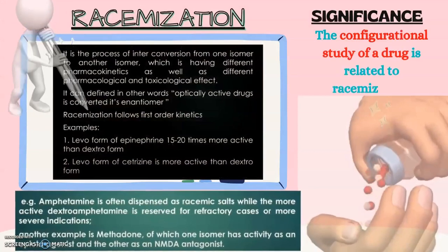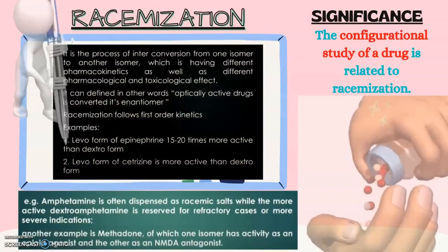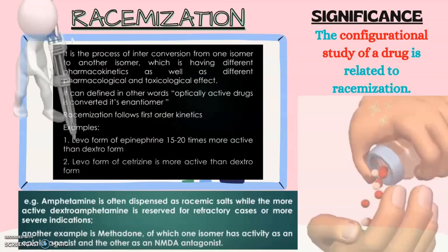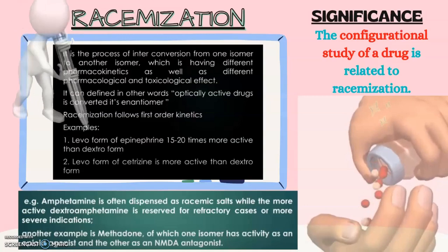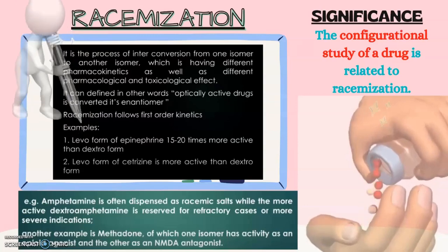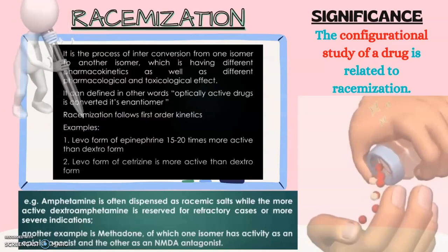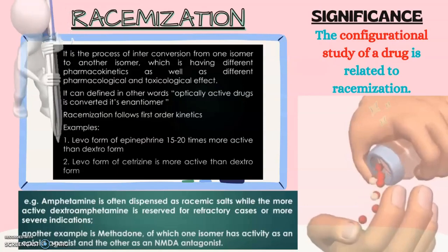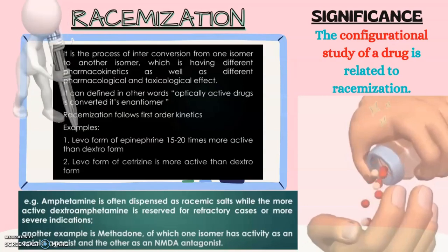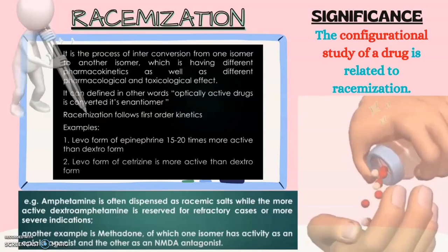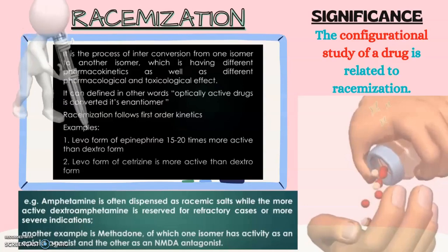We have fourth chemical property: racemization. It is the process of interconversion from one isomer to another isomer which has different pharmacokinetics as well as different pharmacological and toxicological effect. It can be defined in other words: optically active drug is converted to its enantiomer. Racemization follows first order kinetics. Examples included in racemization are: levo form of epinephrine is 15-20 times more active than dextro form. Levo form of cetirizine is more active than dextro form. Amphetamine is often dispensed as racemic salts while the more active dextroamphetamine is reserved for refractory cases or more severe indications. Another and the last example is methadone, of which one isomer has activity as an opioid agonist and the other as an NMDA antagonist.